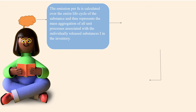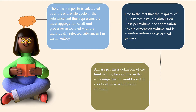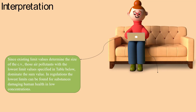The emission per FU is calculated over the entire life cycle of the substance, representing the mass aggregation of all unit processes associated with the individually released substances in the inventory. Since the majority of limit values have the dimension mass per volume, the aggregation has the dimension volume and is referred to as critical volume. A mass per mass definition of limit values, for example in the soil compartment, would result in a critical mass, which is not common.